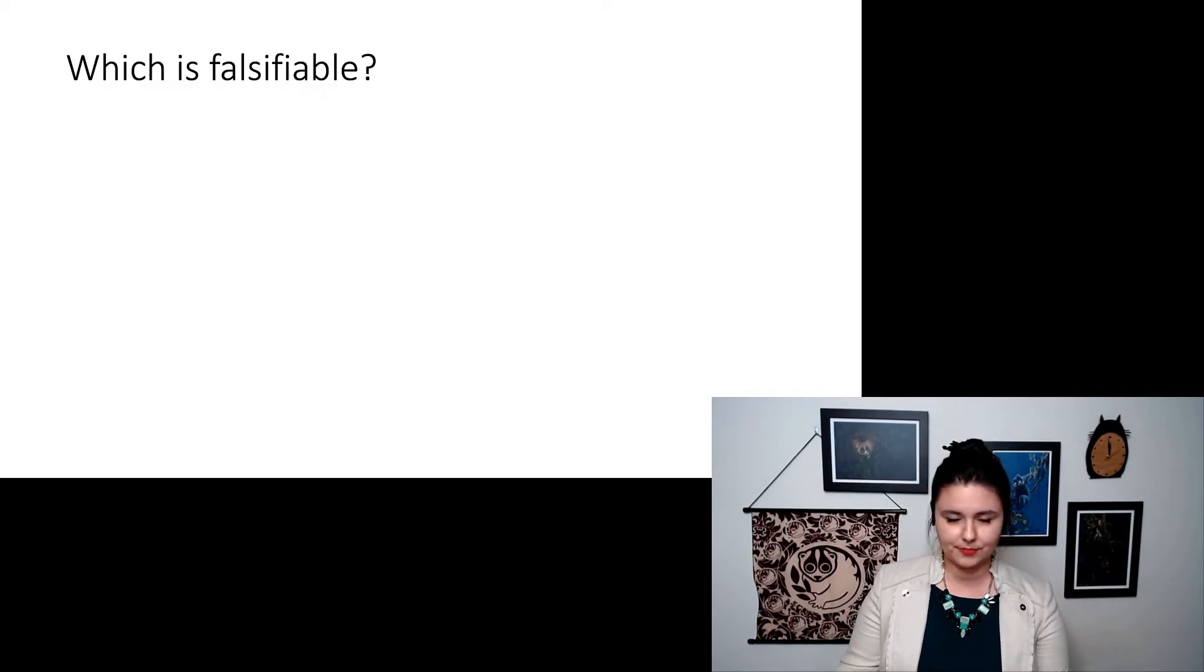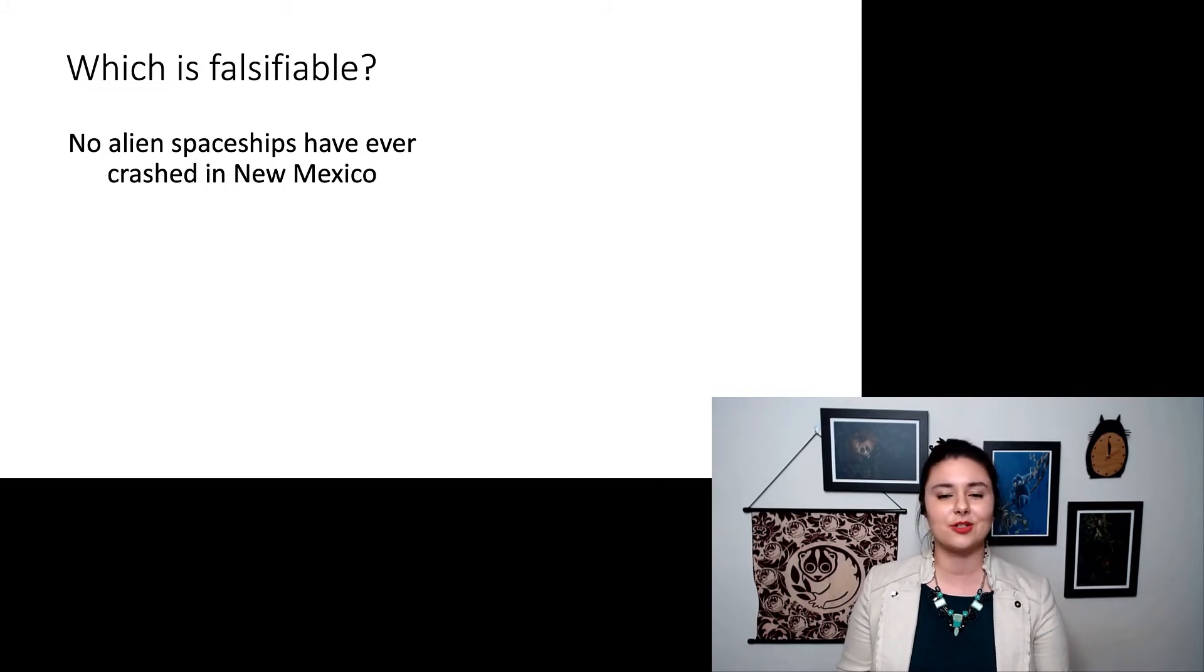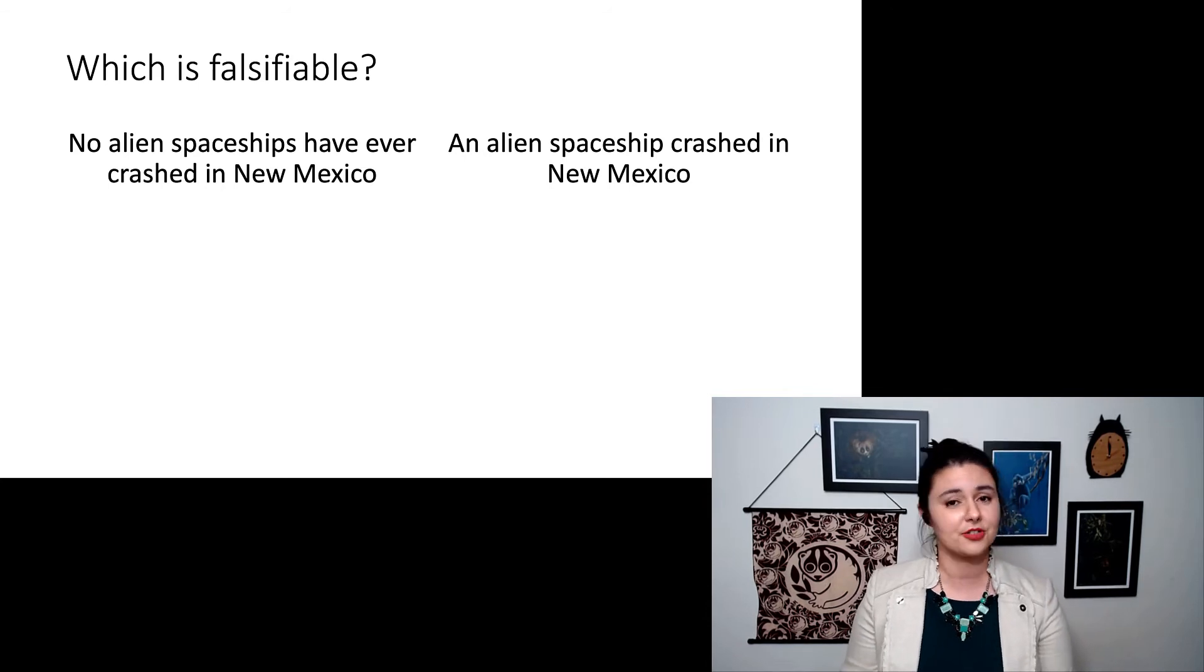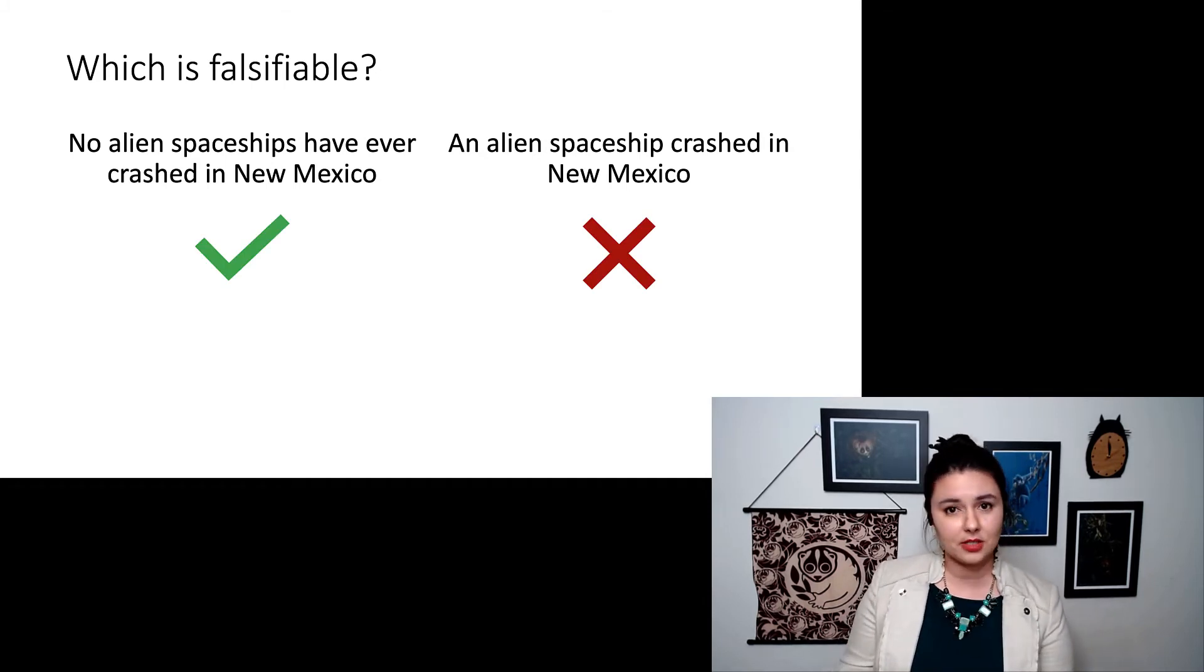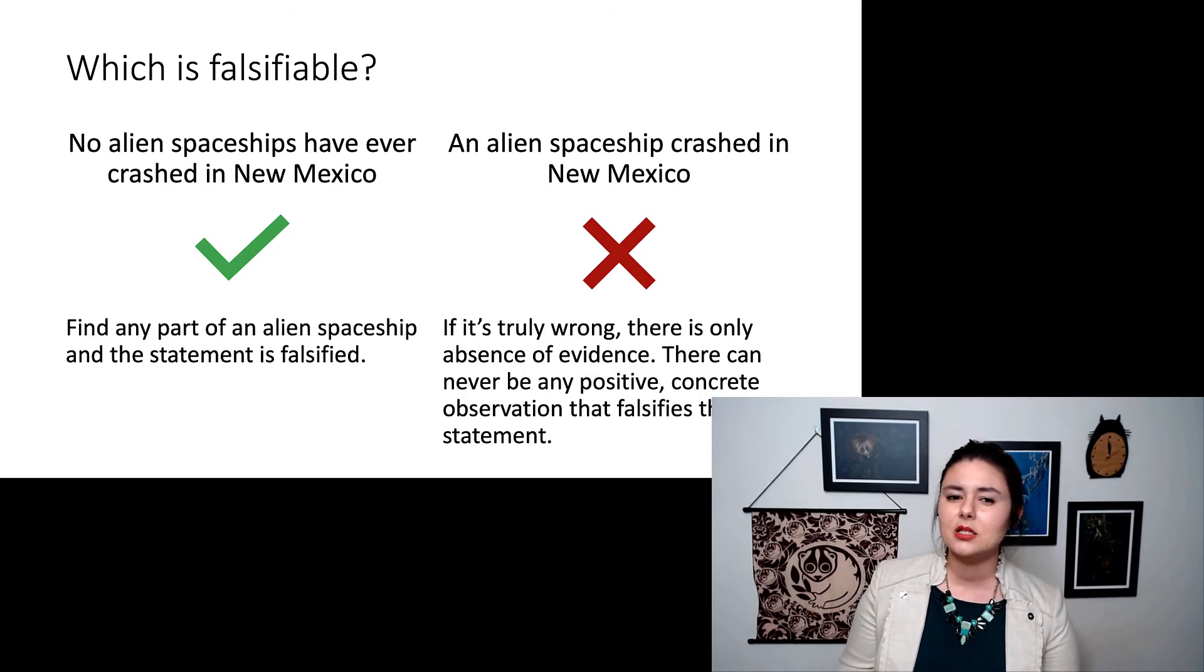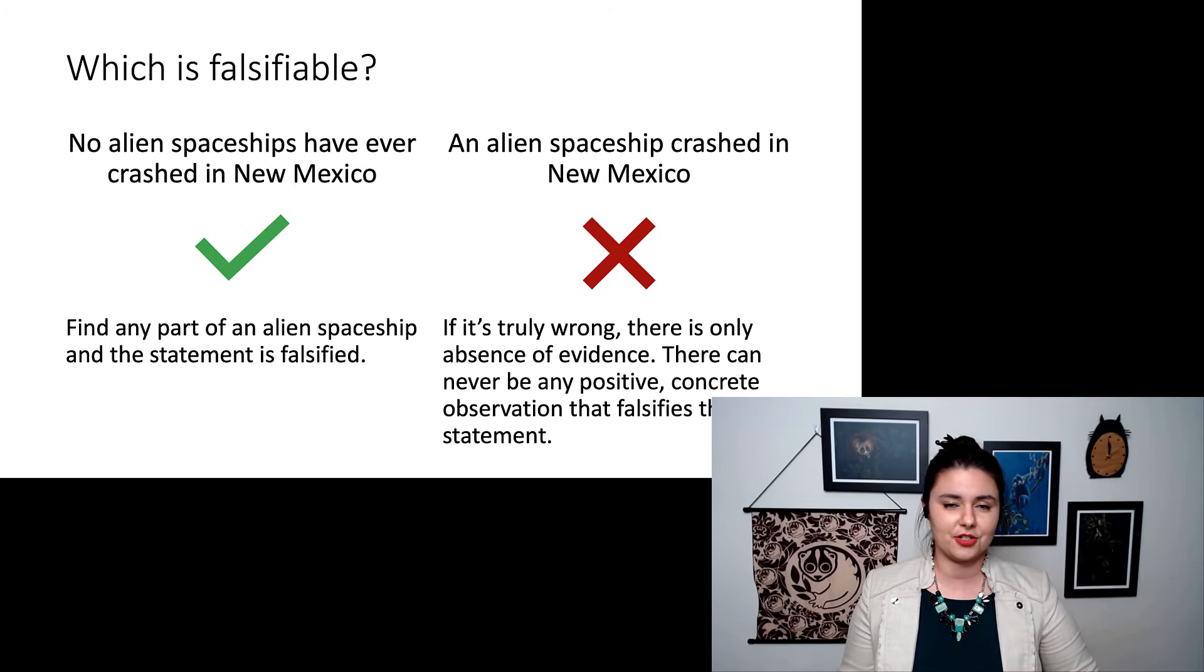Let's look at an example. Here are two statements. First: no alien spaceships have ever crashed in New Mexico. Second: an alien spaceship crashed in New Mexico. They're about the same topic. Take a moment - which one do you think is falsifiable? The first one is falsifiable and the second one is not. No alien spaceships have ever crashed in New Mexico - if we ever find a part of an alien spaceship, then that statement is false. So there are possible conditions under which we can disprove that statement. The second one, an alien spaceship crashed in New Mexico - if it's really wrong, there's only absence of evidence, so we're never really going to be able to disprove it. This is one of the instances where you want to make sure you're careful with your language and how you're forming your hypothesis.